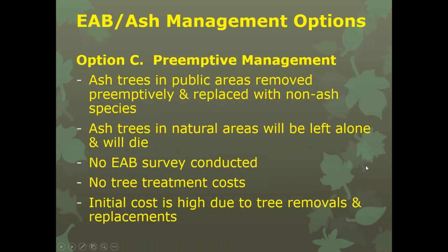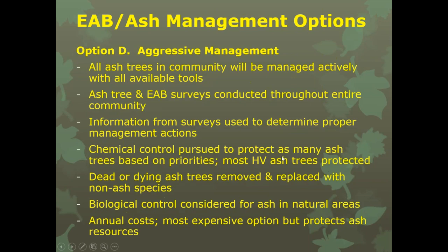Preemptive management — removing ash trees preemptively — is something we saw happening in states like Ohio as EAB progressed eastward. We're lucky to learn from the mistakes of states infested earlier than we were. Option D, aggressive management, is the most expensive option and protects all ash resources, but I don't recommend it unless you have a very large budget.